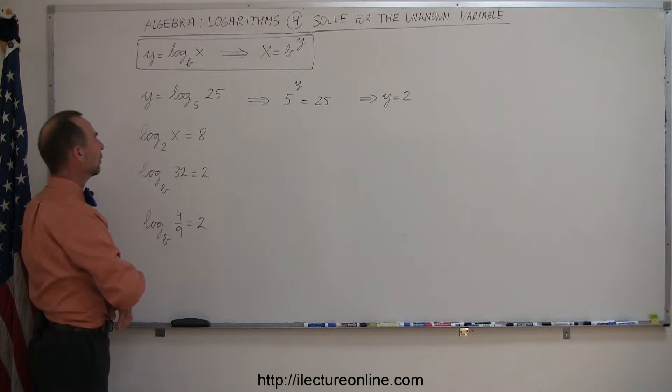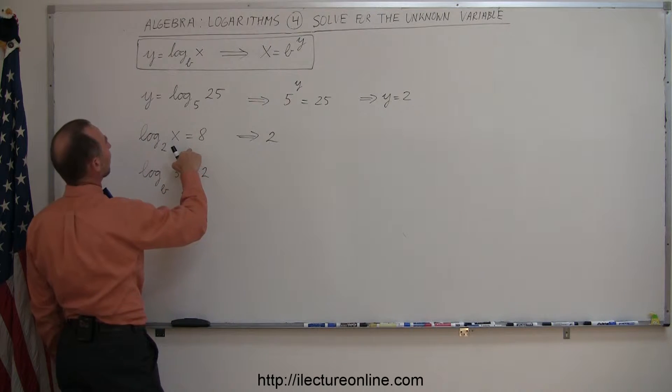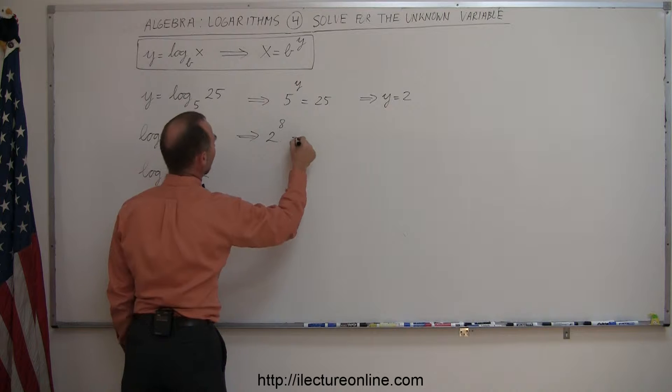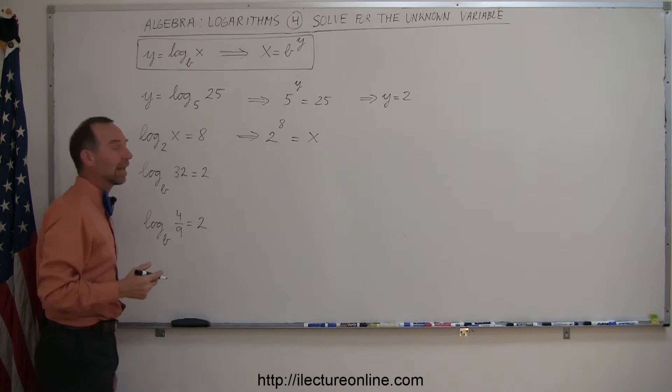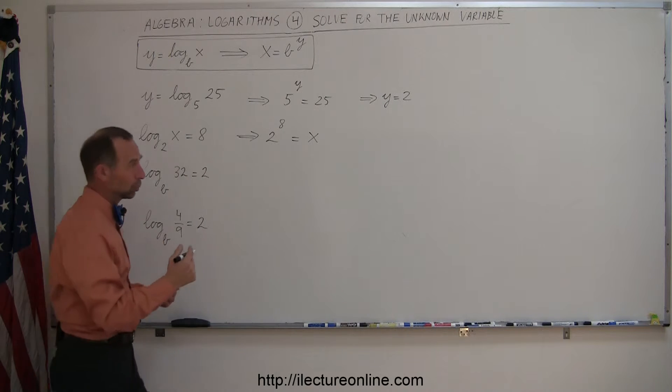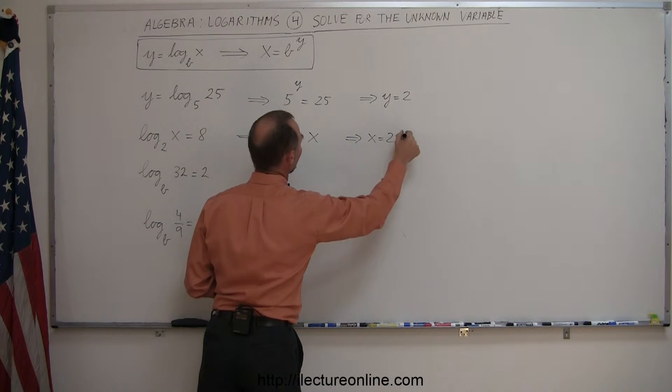Over here, again, we take the base, the base is 2, we raise it to the value right here, 8 power, and we get x. So in this case, x is simply 2 to the 8 power and 2 to the 8 power would be 256. That means x equals 256.